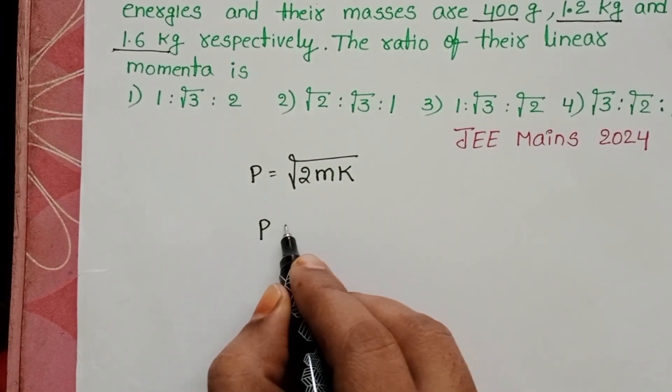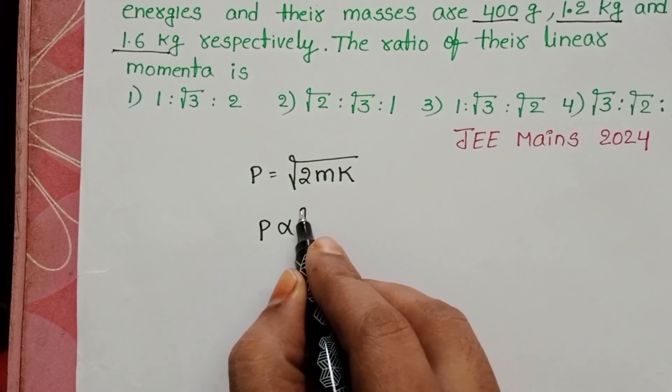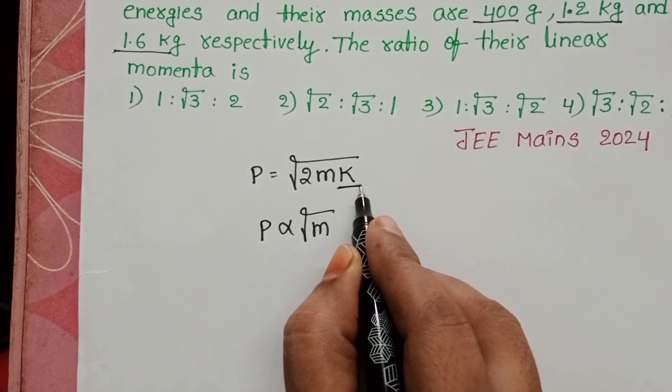So, linear momentum is directly proportional to the square root of the mass, because kinetic energy is constant, and 2 is also constant.